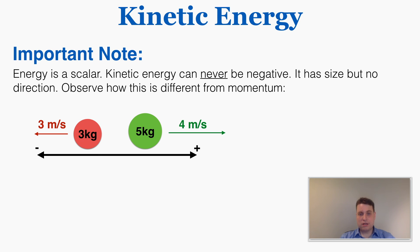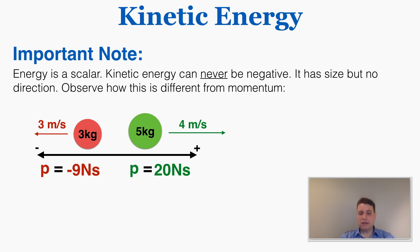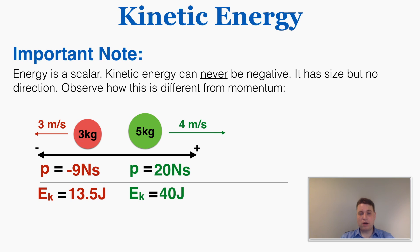One important note: energy is a scalar, and kinetic energy is also a scalar, which means it can never be negative — it has size but no direction. Observe how this differs from momentum. If you calculate the momentum of two objects moving in opposite directions, one is positive and one is negative, but their kinetic energies are both positive. This makes sense because the squared velocity in the KE equation eliminates the negative sign — kinetic energy is always positive regardless of direction.